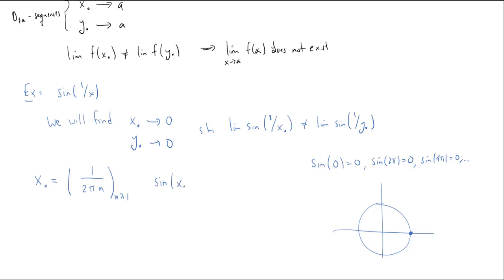OK. And now what happens when I apply sine to, say, X sub n or one over X sub n? Well, this is going to be the sine of one over one over two pi n, which is going to be sine of two pi n, which equals zero. So in fact, the sine of one over X dot is always equal to zero, which implies that the limit of sine of one over X dot is equal to zero.